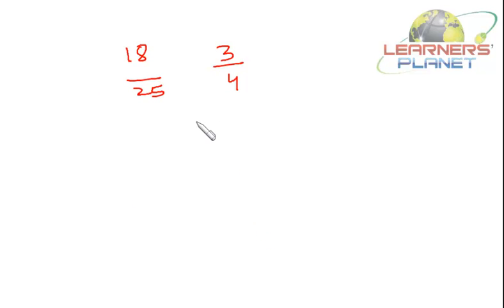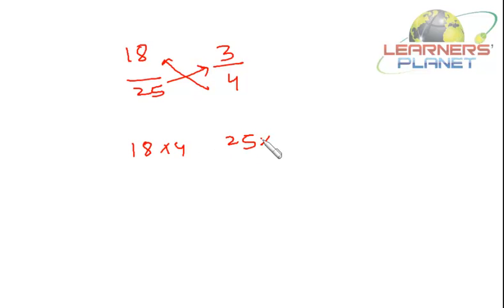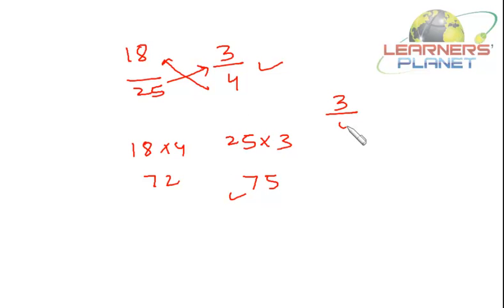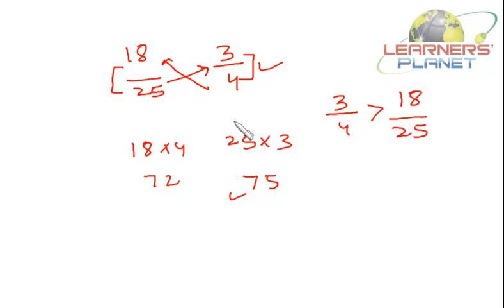Now comparing 18/25 and 3/4 using cross multiplication: 18 × 4 = 72 and 25 × 3 = 75. Since 75 > 72, 3/4 is greater than 18/25. Alternatively using the difference method: the difference for 18/25 is 7 and for 3/4 it is 1. Multiplying 3/4 by 7 gives 21/28, where the difference is also 7. Since 21 > 18, 3/4 is greater than 18/25.